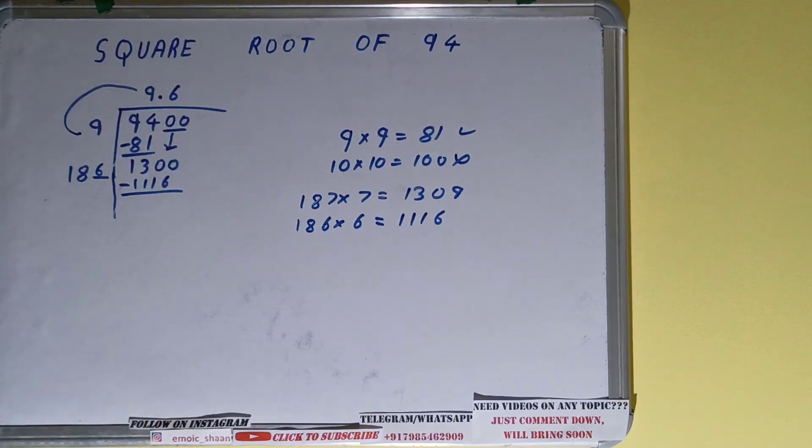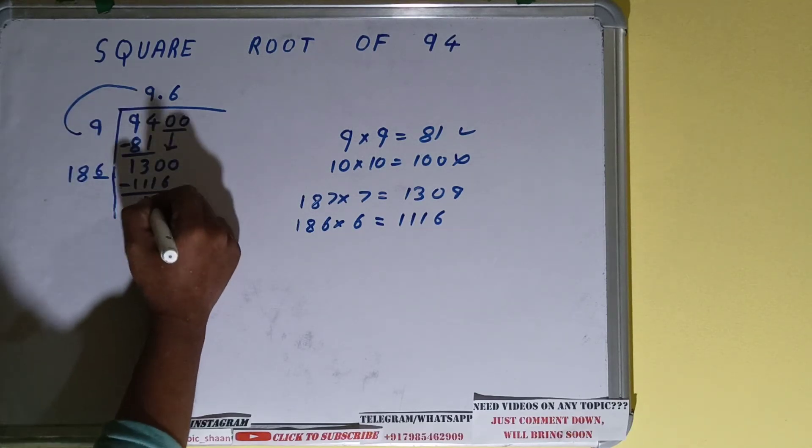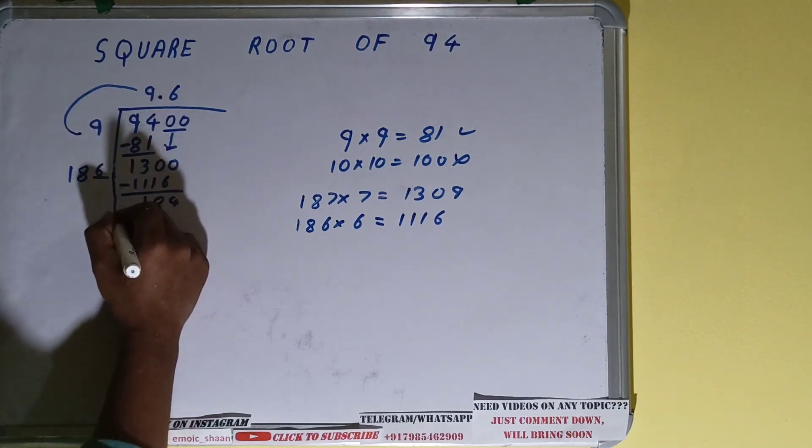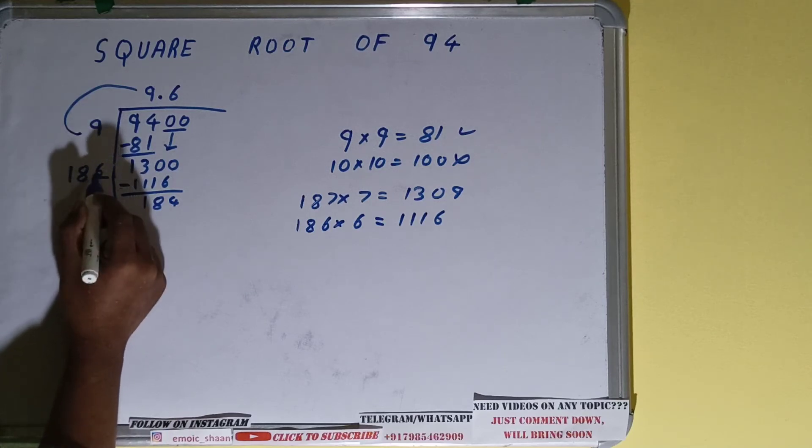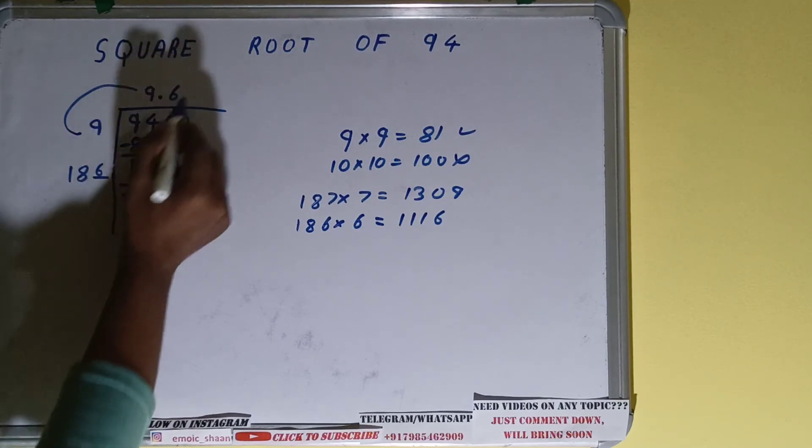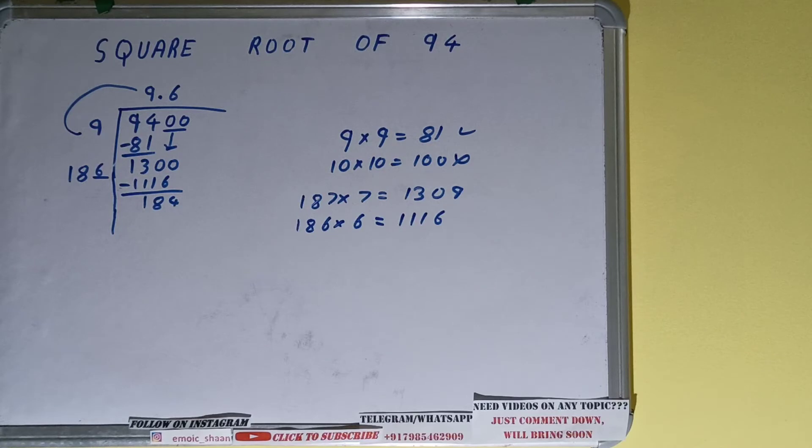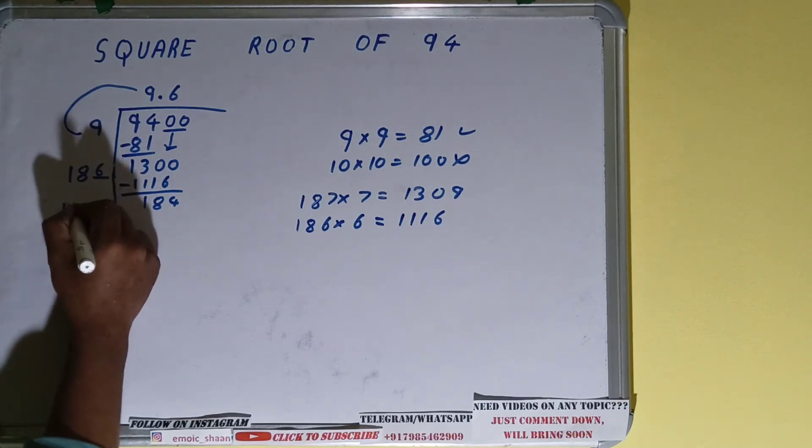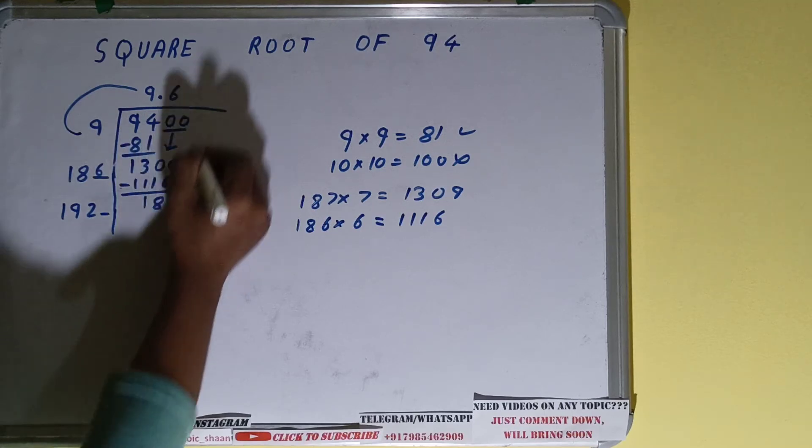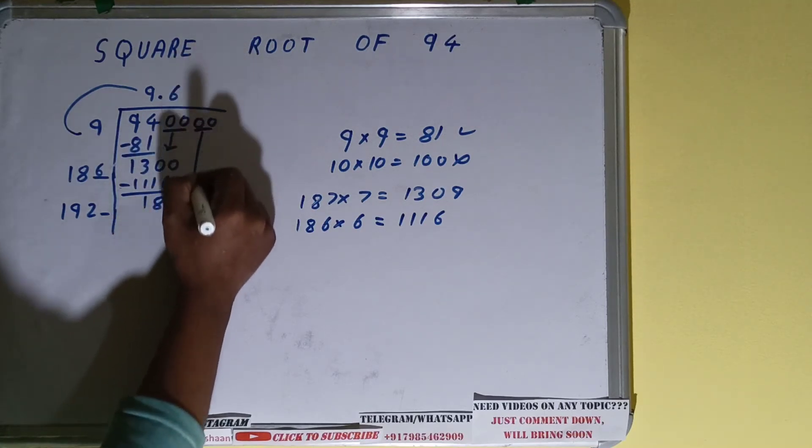Subtract it. You'll be left with 184. Now whatever is your divisor, that is 186, you multiplied with 6 right, so add both. So 186 plus 6 will be 192 and one digit extra over here. Bring one more pair of zeros down.